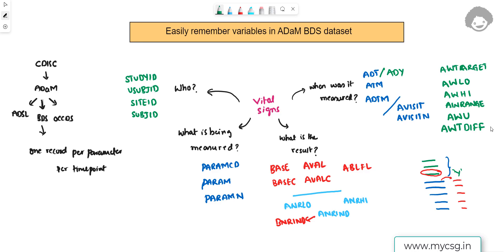We have now identified the additional variables related to visit windowing, and the majority of variables used in an ADaM BDS dataset. The logical flow to remember them is: Who (which subject?), What is being measured?, What is the result?, and When was it measured? Thank you for watching and keep learning.